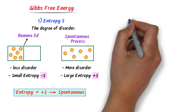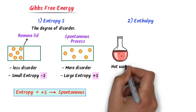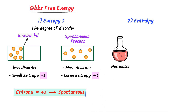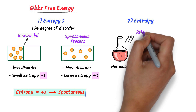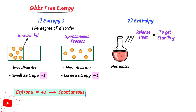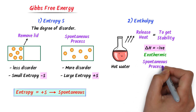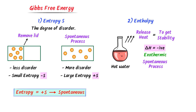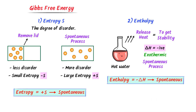Secondly, understanding enthalpy. Let's consider this hot water in this beaker. We know that with the passage of time, hot water releases heat into the surrounding to gain stability. When a system releases heat into the surrounding, its enthalpy change ΔH is negative, and it is an exothermic process. It is also a spontaneous process. Thus, we conclude that if enthalpy change ΔH is negative, it is a spontaneous process.